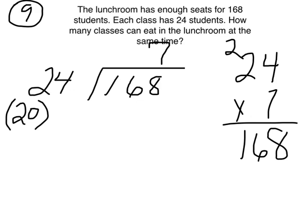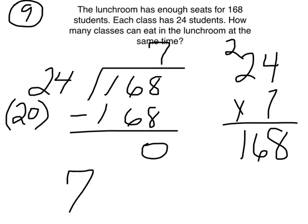So I put a 7 on top. 7 times 24 is 168. And we get a 0 remainder. So 7 classes is our answer.